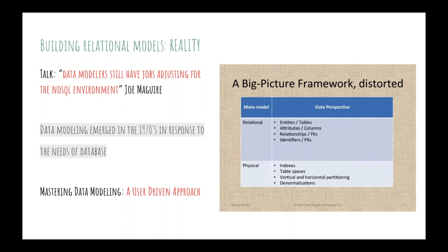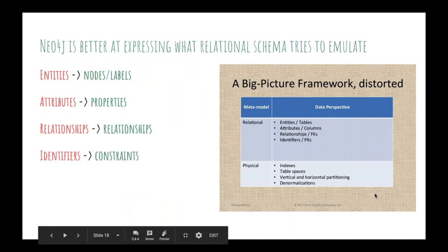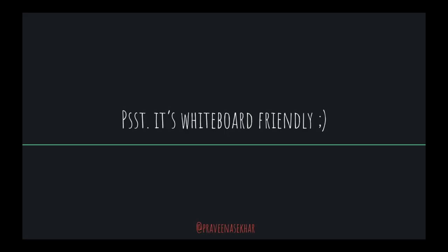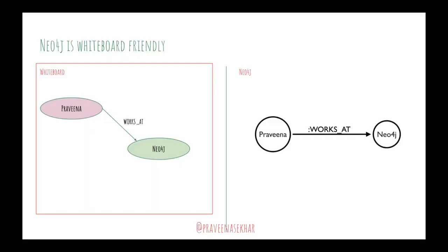When you draw Alice belongs to the ForFuture department on a whiteboard, you just draw two nodes and link them — you don't think about translating it into a join table. You just save the data as whatever is on the whiteboard, which removes the cognitive overload. An example: 'Praveena works at Neo4j' — if I were to model this on a whiteboard, this is how I'd do it, and in Neo4j it translates to the exact same thing.